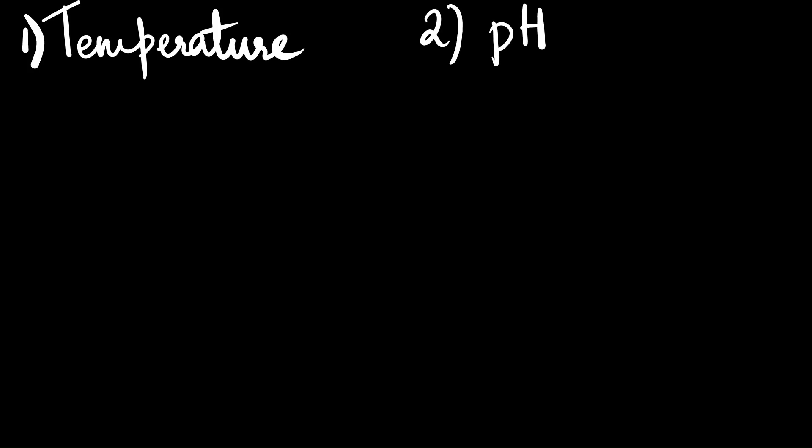The first two factors, temperature and pH, affect proteins in a very similar manner. Both these physical factors can disrupt the tertiary structure of a protein and therefore they can disrupt enzyme functioning as well.